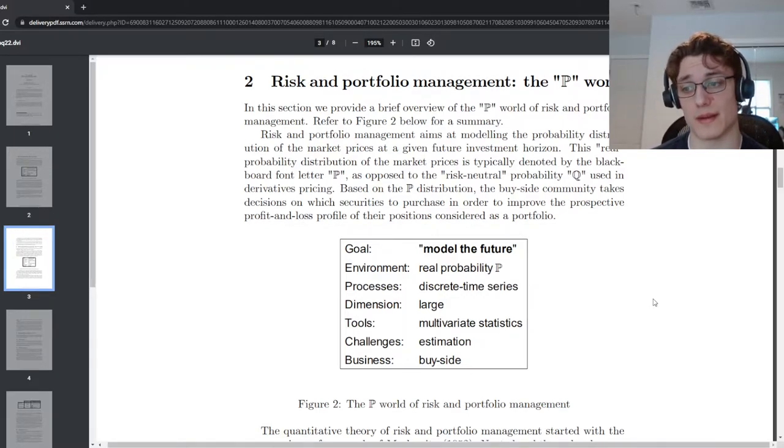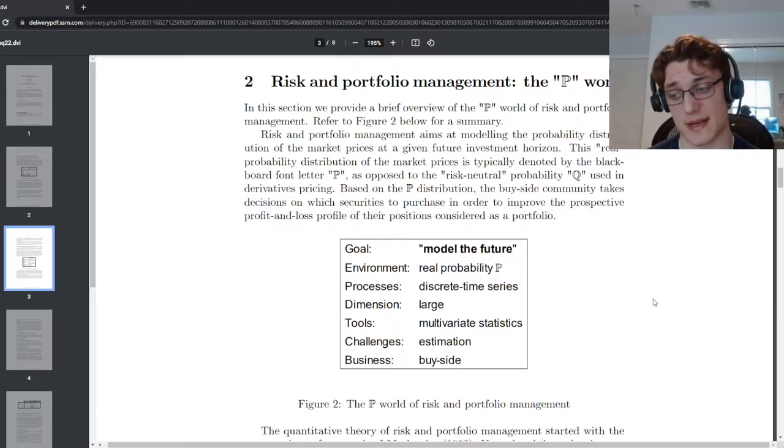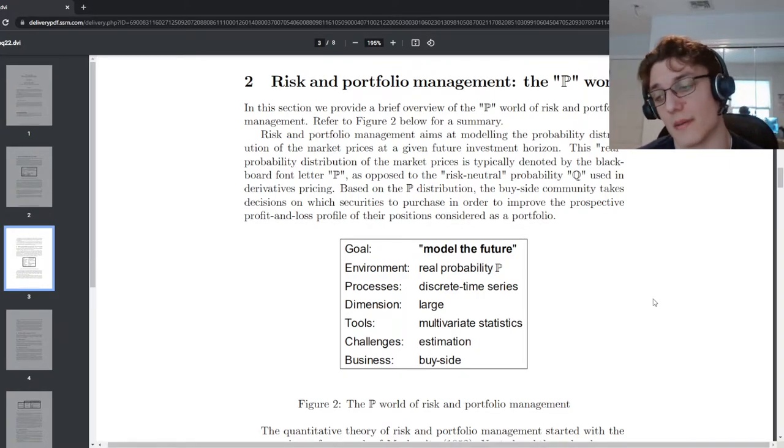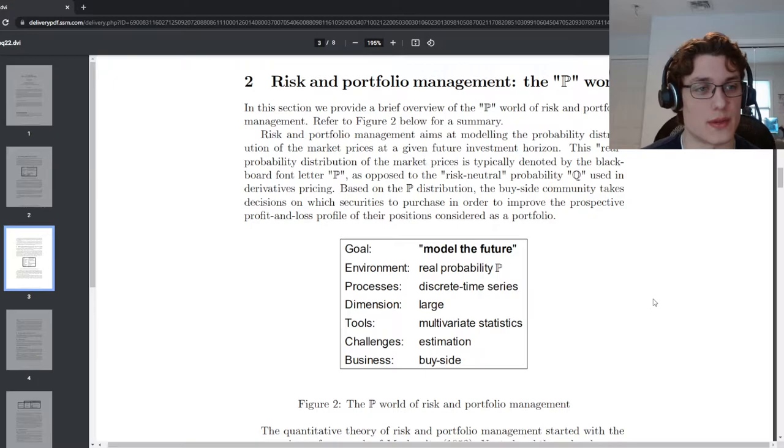So the goal is to model the future. The environment is real probability, P. Processes are discrete time series. The dimension is large. Tools are multivariate statistics, challenges, estimation, business buy side. So you can think of the P world as essentially like portfolio management, more of the proprietary trading sort of thing. That sort of world is what the P quants tend to operate in and for. And the goal is to model the future. Well, yes, and not really. The goal is to kind of come up with a prediction that has a firm statistical basis so that you can maintain profitability in the long run.